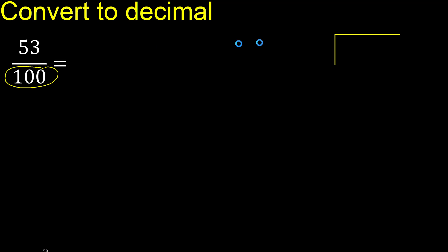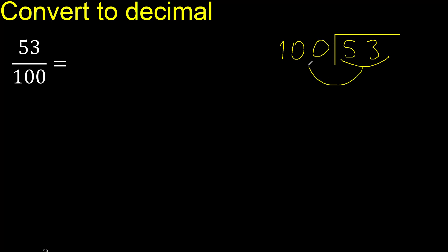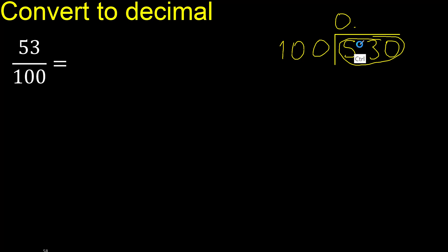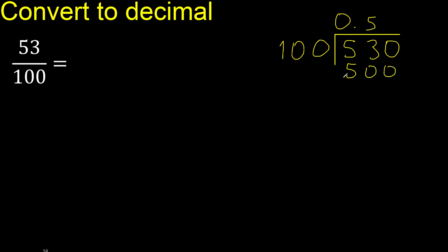53 divided by 100. 53 is less, therefore complete with 0. 100 multiplied by which number is nearest to 530 but not greater? Multiplied by 6 is 600, which is greater. Multiplied by 5 is 500. Subtract: 30 remaining. There is no digit to bring down, so complete with 0.